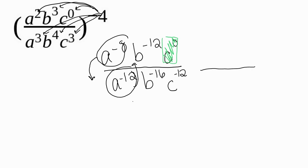That means in my numerator, now I have a to the 12th, b to the 16th, and c to the 12th. In my denominator, I have a to the 8th and b to the 12th. But I don't have any c's because this c was just the whole number one. So it's gone.